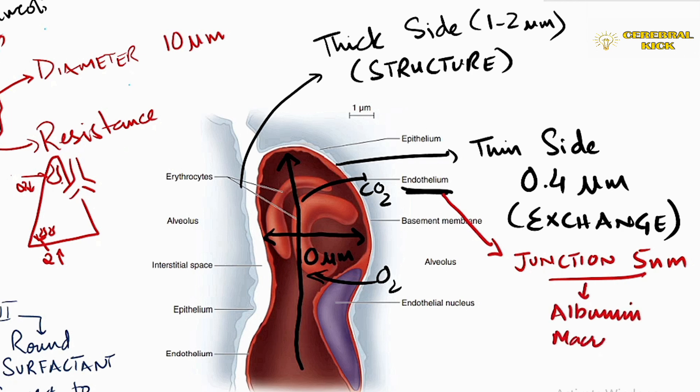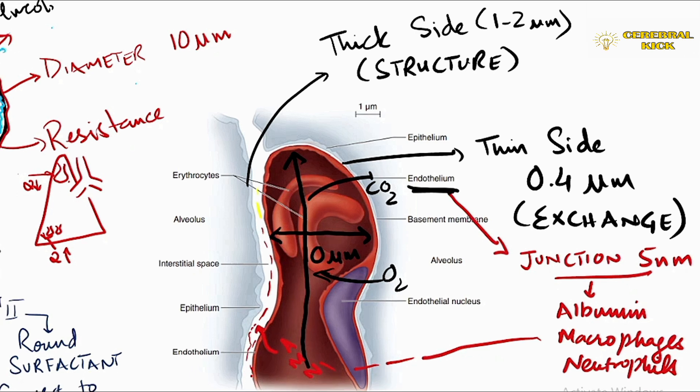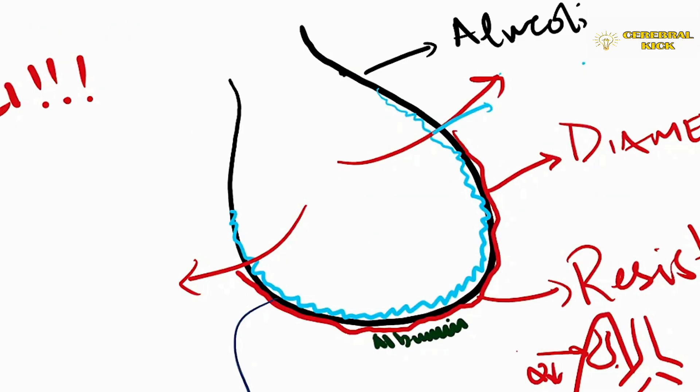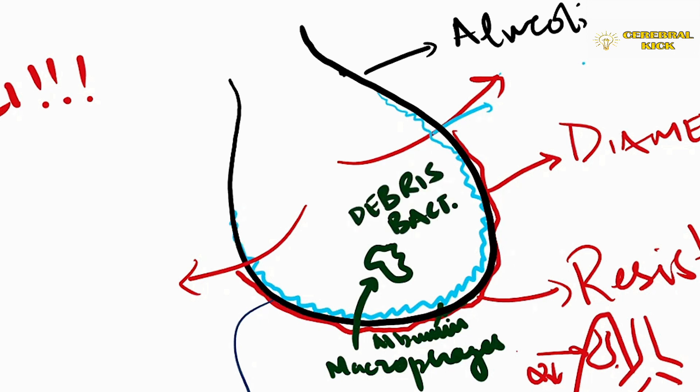The junction, the endothelial junction of these pulmonary capillaries has big gaps around five nanometers, as a result of which albumin, macrophages, neutrophils they easily migrate to the basement membrane and onwards into the lymphatics. The gap junctions in the lungs are five nanometers, as a result of which protein-rich fluid is easily migrated along with macrophages into the basement membrane. The macrophages go into the alveoli and they clear the debris and bacteria, again another work of nature.